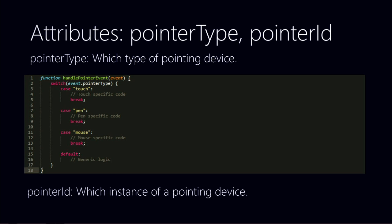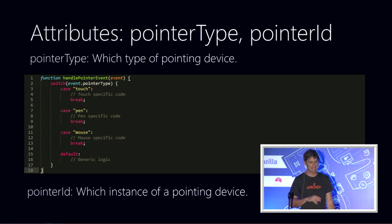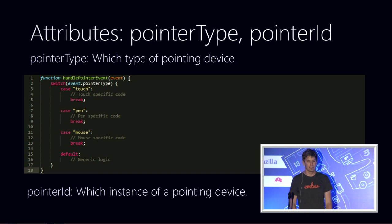In most cases you probably want to handle all pointer devices the same, but if you want to handle a pen differently from a touch device or a mouse, you have the ability with pointer type to do device-specific actions. And because there can be multiple pointer devices in action at once, there's a pointer ID — essentially a thread ID for that one pointer device — so you can keep track and separate multiple simultaneous inputs.